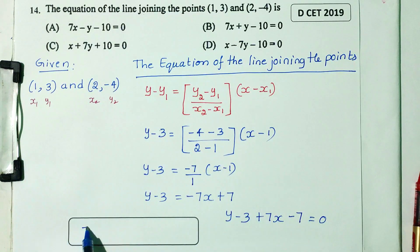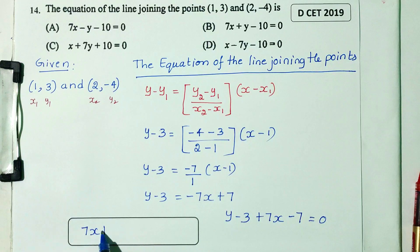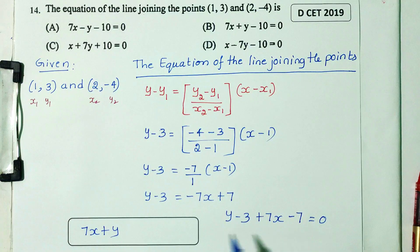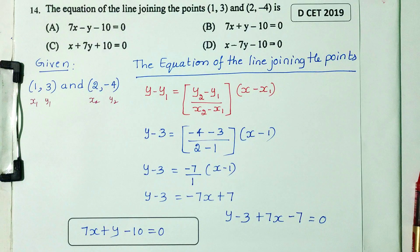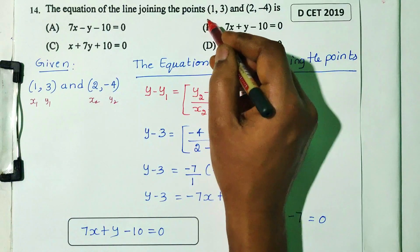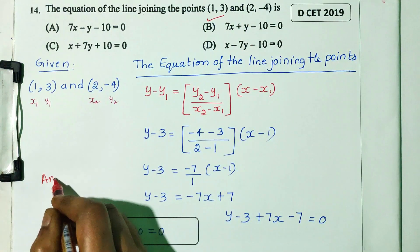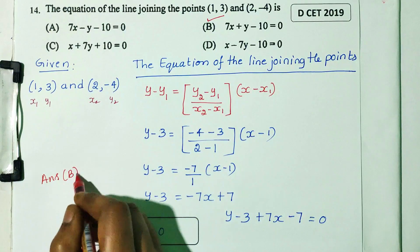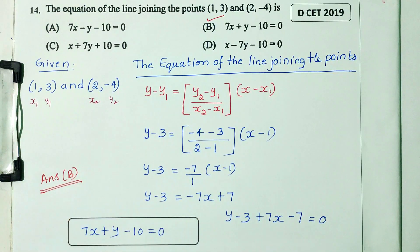Rearranging: 7x plus y minus 3 minus 7 equals 0, that is 7x plus y minus 10 equals 0. Option B is the correct answer for question number 14.